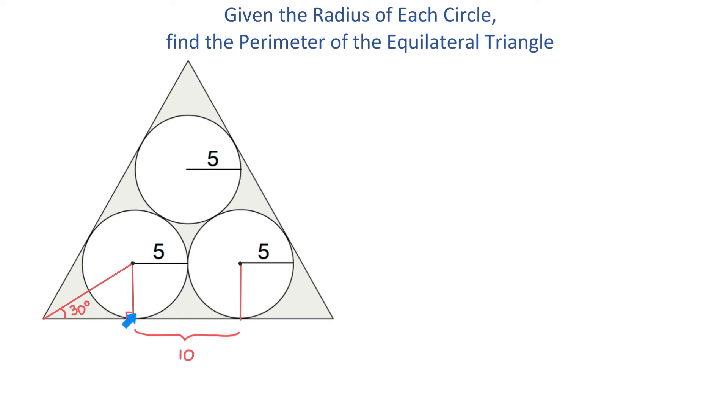In this right triangle, if this angle measures 30 degrees, then this one measures 60 degrees. What else we know about this right triangle is that this side is 5 units because this is the radius of the circle.